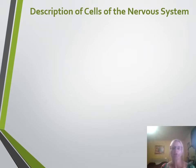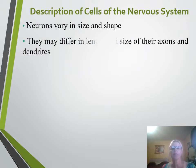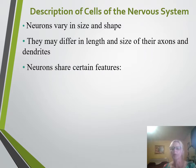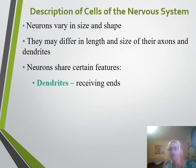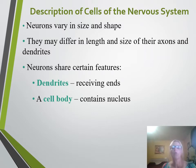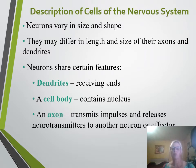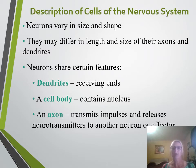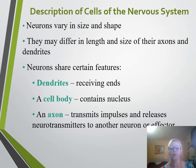Neurons are the structural and functional unit of the nervous system. They have different sizes and shapes — some can be a couple of feet long and some are very tiny, depending on their function, because structure determines function. All neurons share three basic parts: dendrites, which receive information; the cell body, which is where the nucleus is; and an axon, which transmits the impulse. The axon can also release neurotransmitters to another neuron or to an effector cell.